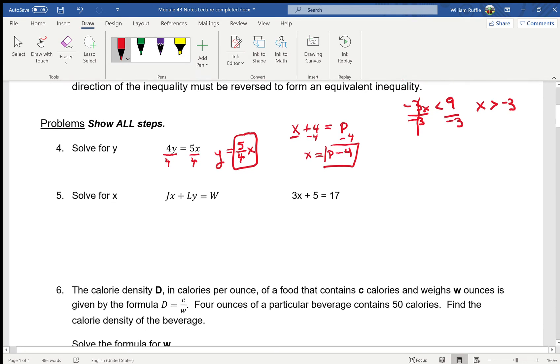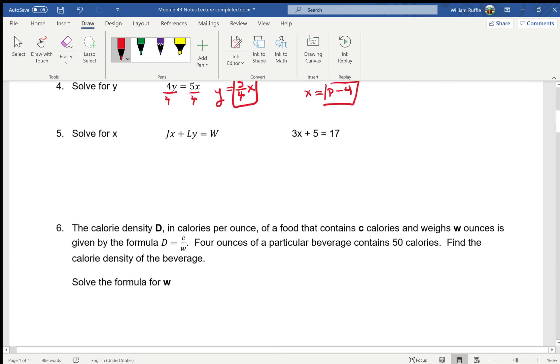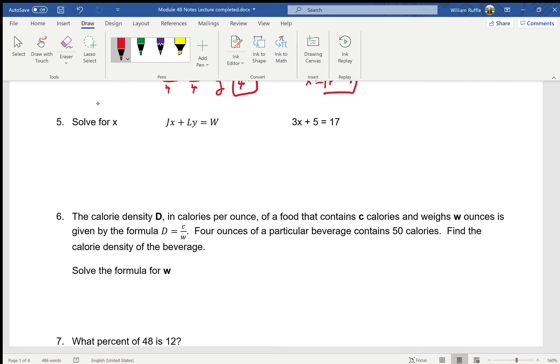Now, this next one, sometimes they get harder. We have to solve for x. We have jx plus ly equals w. Now, this question and the 3x plus 5 equals 17 are the exact same steps. I know you're doubtful on this because they look so different, but they are. So if you really understand your algebra steps, this is not too difficult.